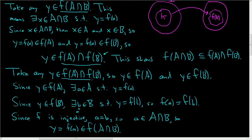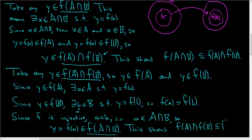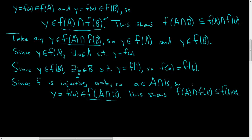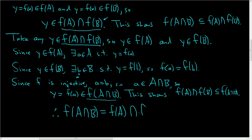So we started with Y in this set and showed it's in this set. This shows that F of A intersect F of B is a subset of F of A intersect B. So we showed the inclusion both ways, so we're done. Therefore, F of A intersect B is equal to F of A intersect F of B. Not a hard proof at all — it's just carefully using the definitions. I hope this helps.